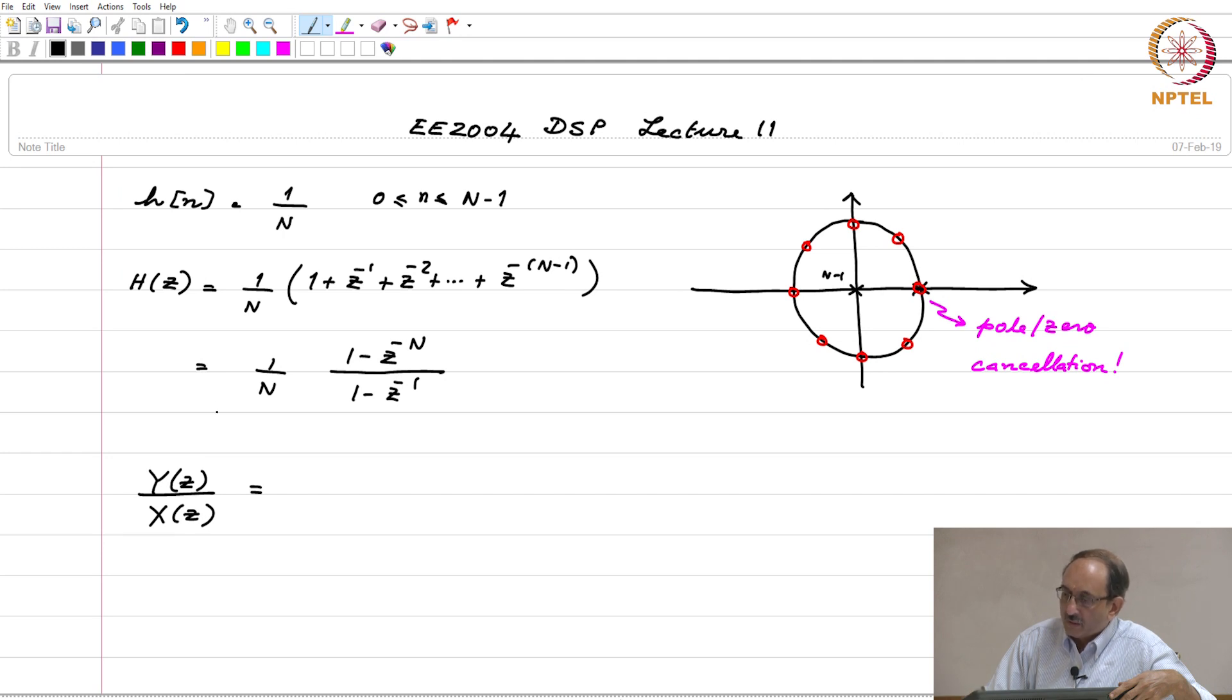Drawing upon that analogy, h of z can be thought of as the system transfer function, which in turn is y of z over x of z, and this is 1 over n times 1 minus z to the minus n by 1 minus z inverse.